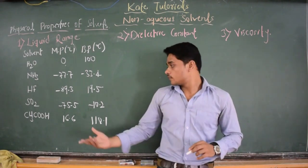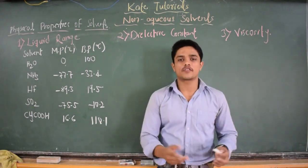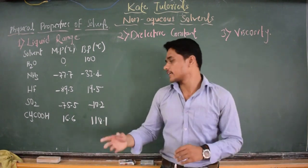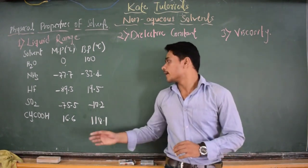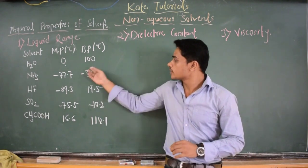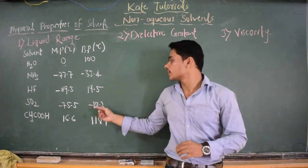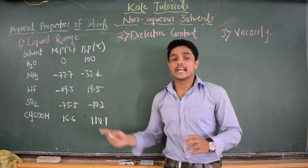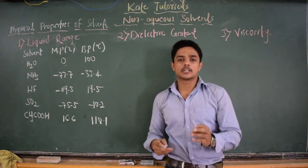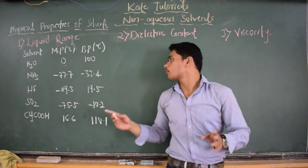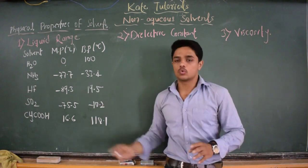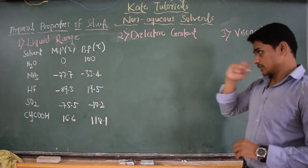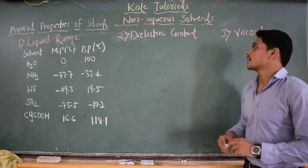In organic chemistry, a few reactions take place in the presence of acetic acid, and you will encounter those reactions. These non-aqueous solvents — ammonia, HF, and SO2 — require negative temperatures, as their melting point and boiling point range is negative. So we need to maintain negative temperature to keep them in the liquid range.